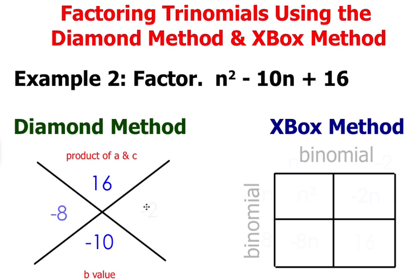These are the correct two factors. Negative 8 times negative 2 is positive 16, and the sum of negative 8 and negative 2 is negative 10.